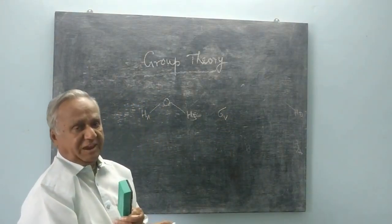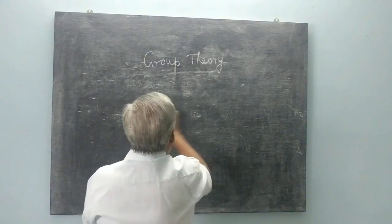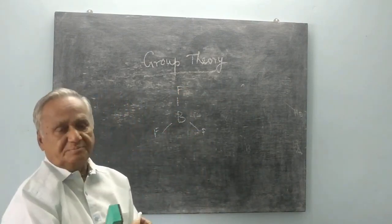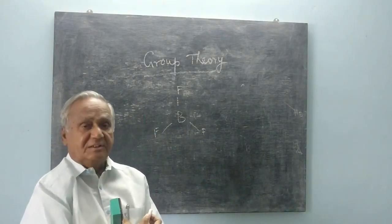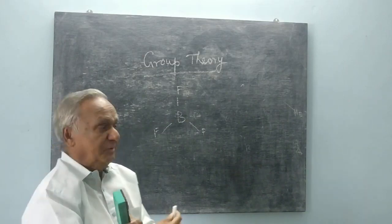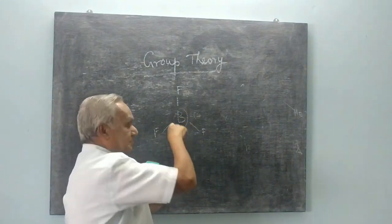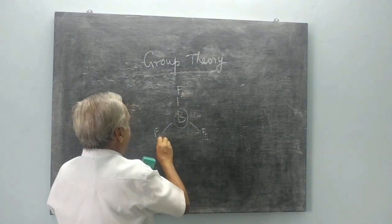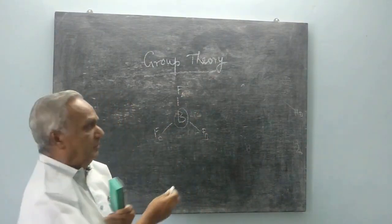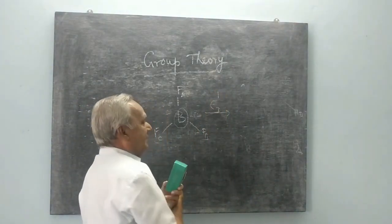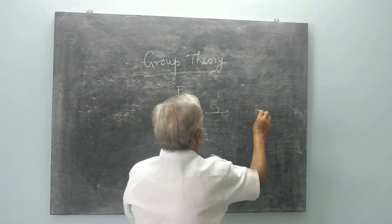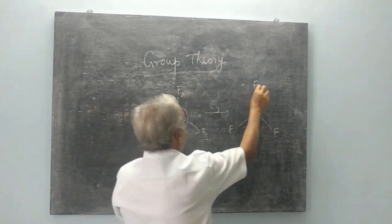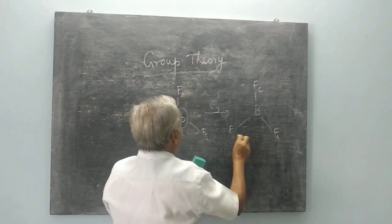To illustrate what a horizontal plane is, let me consider the molecule NH3. This contains a C3 axis. If you put an axis perpendicular to the board and give a rotation, labeling these atoms as A, B, and C — if I give a 120-degree rotation and call it C3-1, C goes over here, A comes over here, and B comes over here.